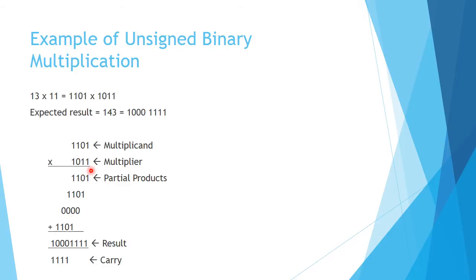We then repeat that process for the next bit, which is also a 1 in the multiplier, giving us the same 1101. We put that below the first partial product and shift it one bit to the left. We then go on to the 0, which produces all 0s when multiplied — we place that down there and shift it one bit to the left. Finally, with the last bit being 1, we get 1101 again, placed at the bottom and shifted one bit to the left.